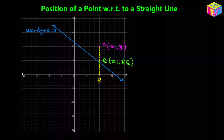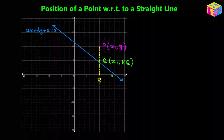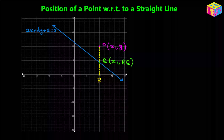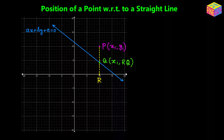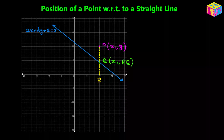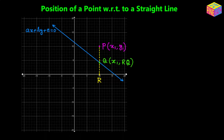In this video we are going to discuss how to find out the position of a point with respect to a straight line. When we talk about a straight line, there are always two sides. Depending on the orientation, the point could be above, below, to the left, or to the right of the line. If we are given the equation of a straight line and the coordinates of a point, is there a way to figure out which side the point lies on? There is, and that's what we are going to investigate.